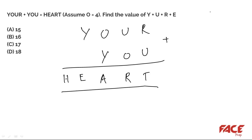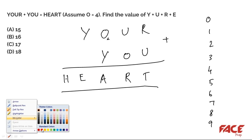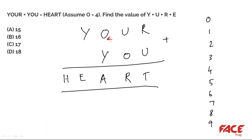There are two rules in cryptarithmetic. First, the digit assigned to each alphabet must be unique — from 0 to 9, no repeats. For example, if R is 1, then U cannot also be 1. Second, the carryover is always 1. The only data given in this question is O = 4. Watch closely — it may seem difficult at first but gets easy with practice.